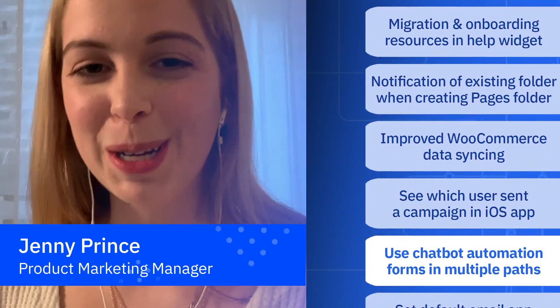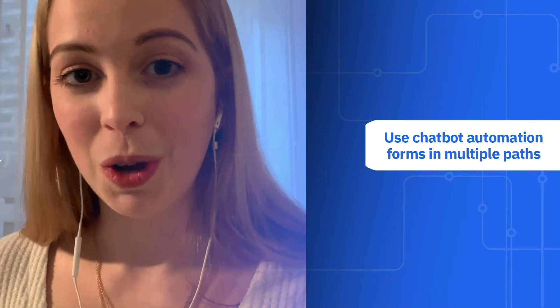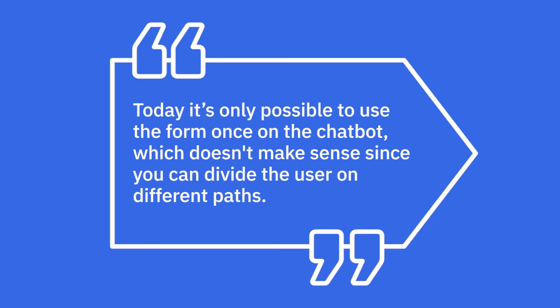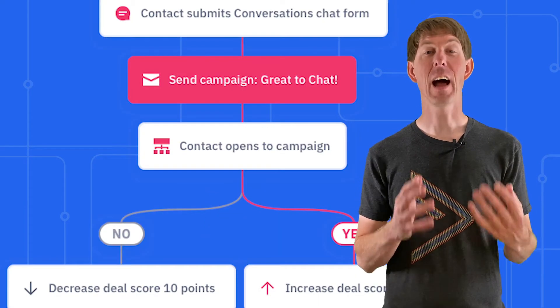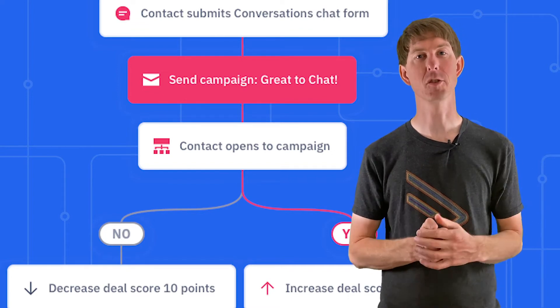Hey everyone, my name is Jenny, a product marketing manager at ActiveCampaign. Our customer Barbara Mendez requested the ability to use a form block on more than one path within a chatbot automation. Barbara wrote: today it's only possible to use the form once on the chatbot, which doesn't make sense since you can divide the user in different paths. Great idea, Barbara. Chatbot automations allow you to manage a set of automated messages that enable you to gather information from your visitors before you begin chatting. This enables you to get the crucial information you need to provide a personalized chat experience. An effective way to gather that information is by using the form blocks in ActiveCampaign's chatbot automations. I'm happy to share that using multiple form blocks in a single chatbot automation is now possible.